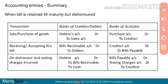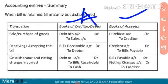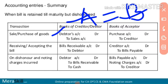First of all, the sale or purchase journal entry. In the books of the drawer, suppose this is Mr. A and Mr. B. In the books of A (drawer), the entry is: Debtor account debit to Sales. That means B is debited to Sales. In the books of B (acceptor/purchaser), the entry is: Purchase account debit to Creditor, where the creditor is A.